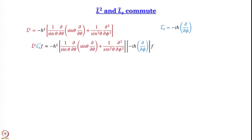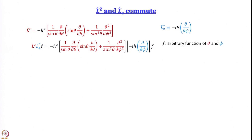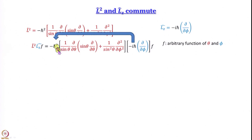Let us verify whether they commute. First we take the sequence: make Lz operate on f, then L² operates on the result. We have f as an arbitrary function in θ and φ. Lz is −iħ ∂/∂φ, which operates on f; then the L² operator operates on the new function. We can take the −iħ constant out. We have one minus sign from Lz and another minus sign from L²; these give plus one. The constant that comes out is iħ³. Inside, we get ∂f/∂φ.